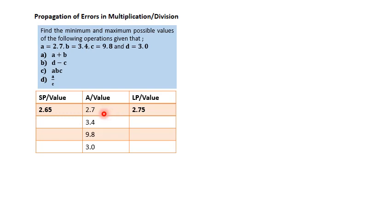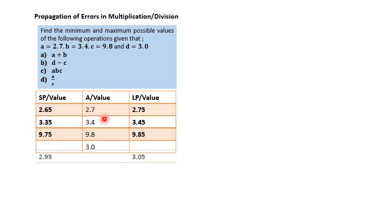Another explanation: since 2.7 is given correct to one decimal place, we take 0.1 (because of one decimal place), divide by 2, then add and subtract from 2.7. That gives an upper figure of 2.75 and a lower figure of 2.65. The same applies to 3.4, 9.8, and 3.0 — all given correct to one decimal place. Now let's operate on the questions.